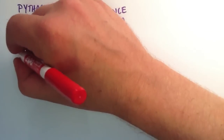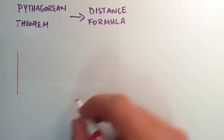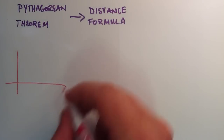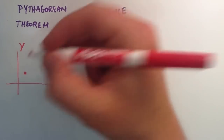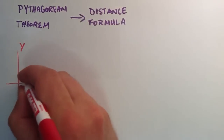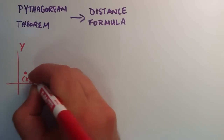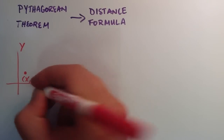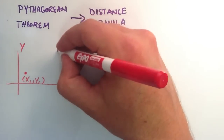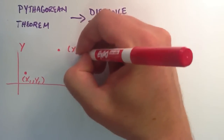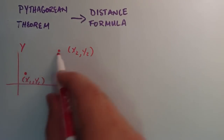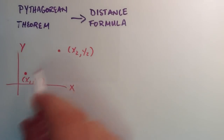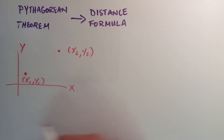The distance formula tells us what the distance is between any two points on an xy plane. We'll go ahead and draw our two points. We'll call this one x1, y1, and we'll call this point x2, y2. These two points can represent any two points on the xy plane.